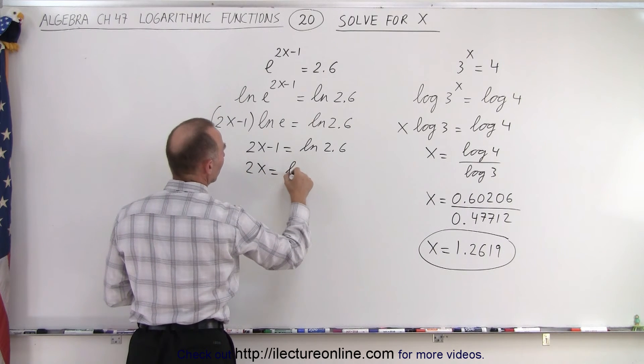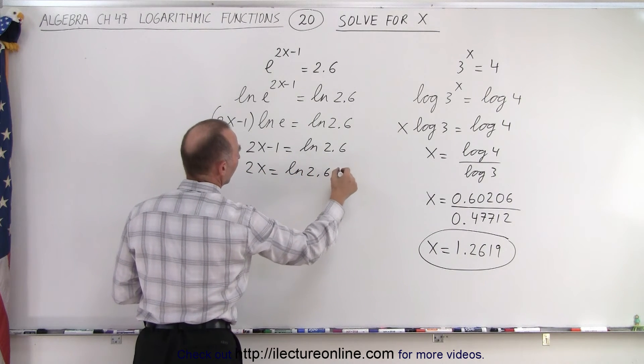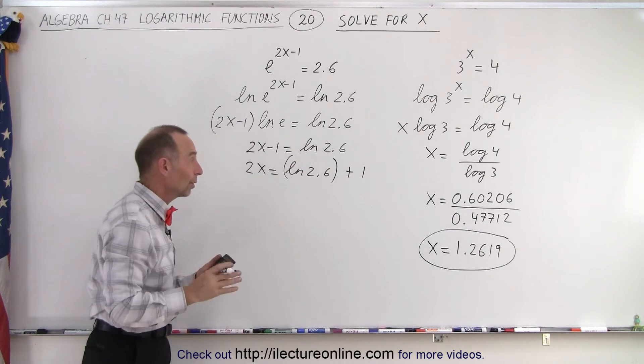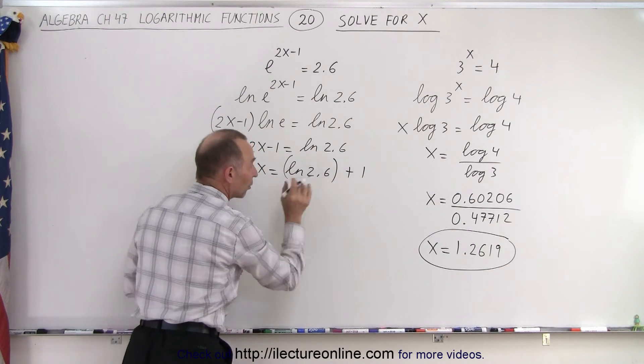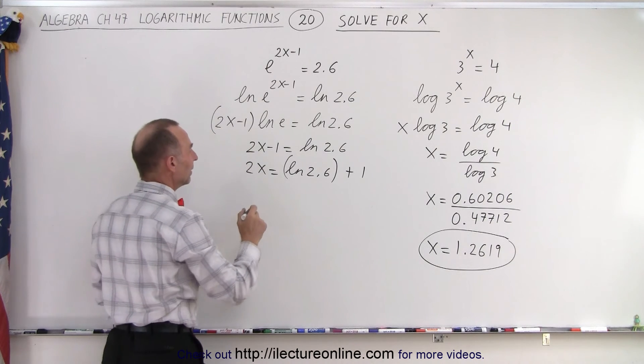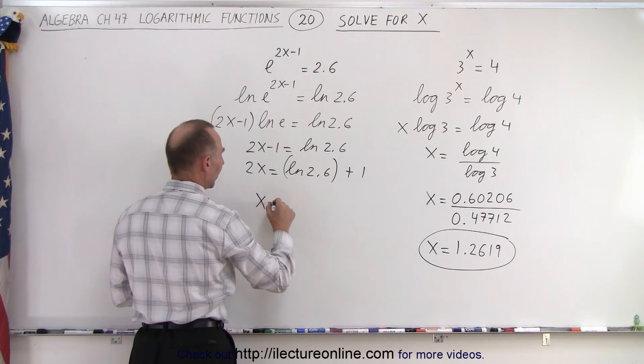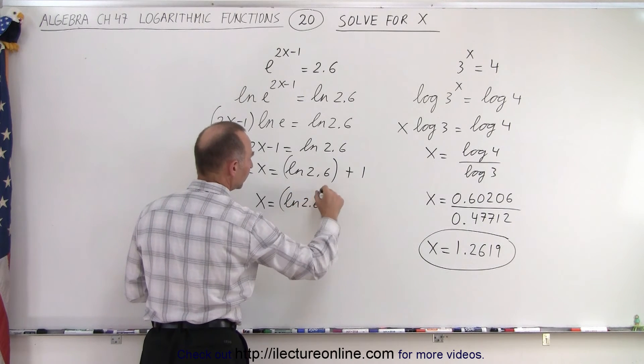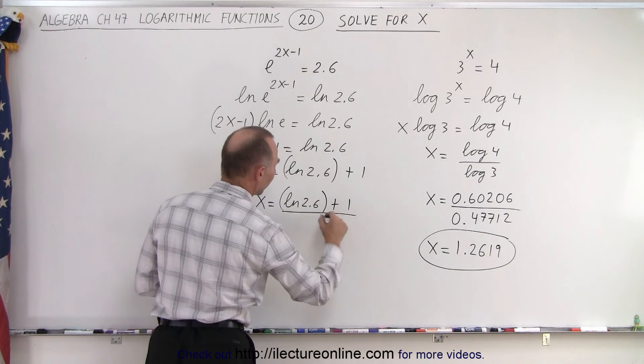So 2x = ln(2.6) + 1. Sometimes it's a good idea to use parentheses to show the +1 isn't part of the 2.6. Then we divide both sides by 2: x = (ln(2.6) + 1)/2.